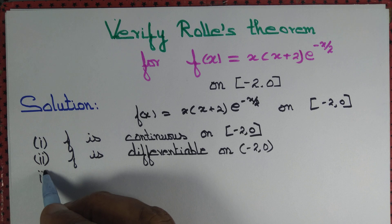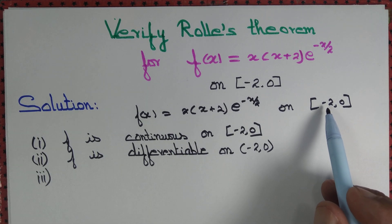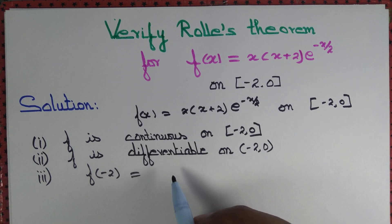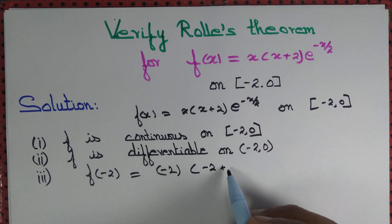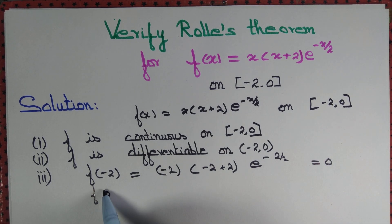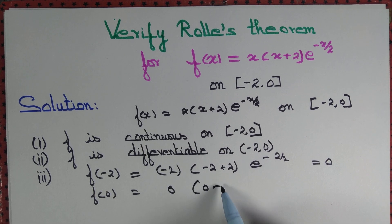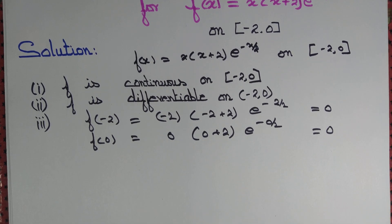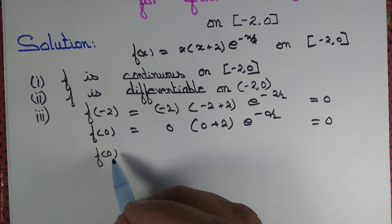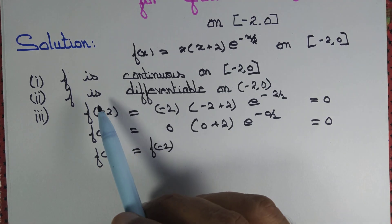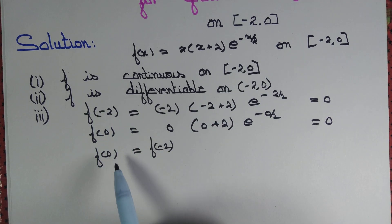The third criterion is that the values of the function at the endpoints must be the same. The endpoints here are -2 and 0. f(-2) = (-2)(-2+2)e^(-2/2) = (-2)(0)e^(-1) = 0. f(0) = (0)(0+2)e^(0/2) = 0, since 0 times any quantity is 0. So f(-2) and f(0) are equal. The values of the function at the endpoints are the same.